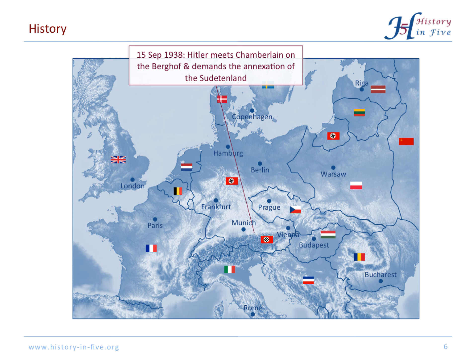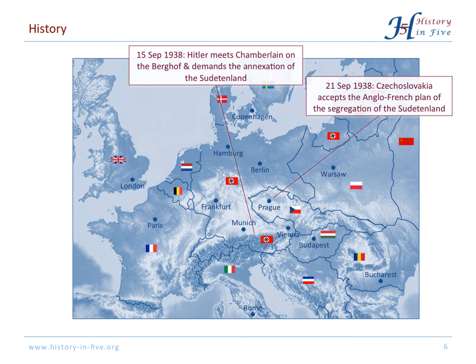The British Prime Minister Chamberlain came to Germany to discuss the situation with Hitler, and he learned of Hitler's demands to annex the Sudetenland. As there was an appeasement policy at the time, he discussed the whole thing with Daladier from France and they agreed to give the Sudetenland to the Germans. The Czechs were not really asked — they had to agree to the Anglo-French plan.